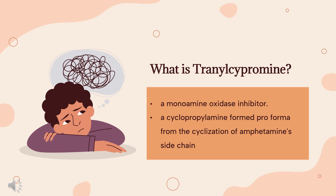Tranylcypramine, sold under the brand name Parnate among others, is a monoamine oxidase inhibitor. More specifically, Tranylcypramine acts as a non-selective and irreversible inhibitor of the enzyme monoamine oxidase. Tranylcypramine is a cyclopropylamine formed pro forma from the cyclization of amphetamine side chain; therefore, it is classified as a substituted amphetamine.